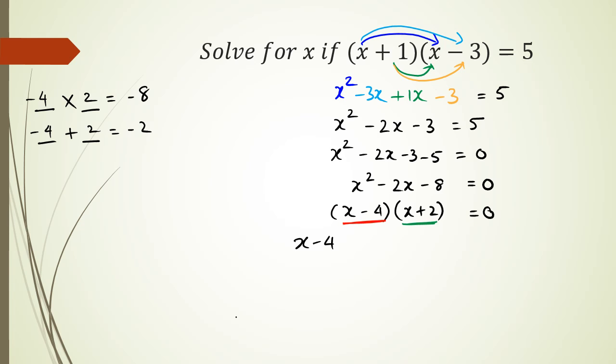So x minus 4 equals 0 or x plus 2 equals to 0. So x is equal to positive 4, because 0 plus 4 is 4, and x is equal to 0 minus 2 is negative 2. So the two answers that I have for this particular question are x equals negative 2 and positive 4.